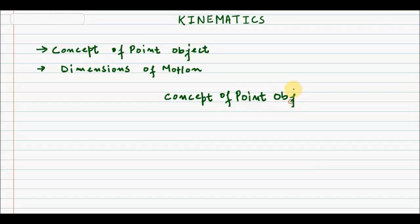So what does this concept mean and why do we need it? Any object whose size is similar to that of a point is called a point mass or a point object. Since a point is a dimensionless quantity, the object which we are treating as a point will also become dimensionless — that means its length, breadth, and height will coincide.